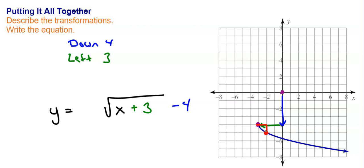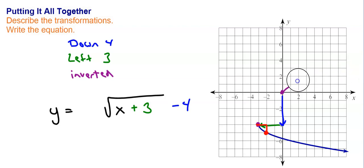In most cases we won't deal with size changes when writing functions, because these can get rather complicated. Is it inverted? In this case yes — with all even roots, the parent functions look something like this, so this one is flipped upside down. To show inverted in the equation, we change the sign in front, so it becomes a negative.